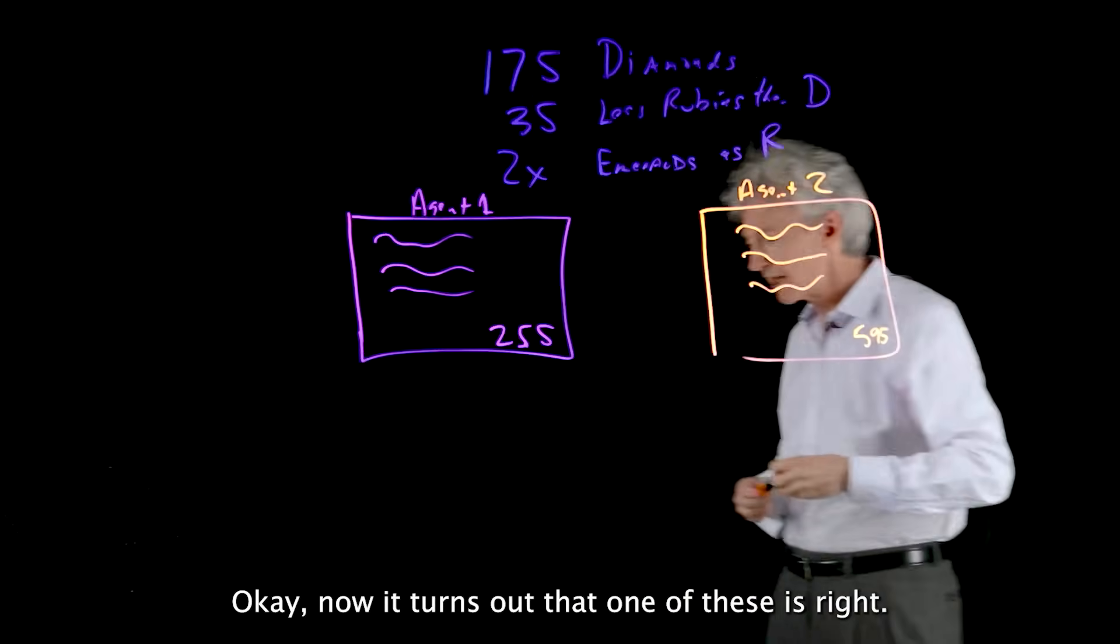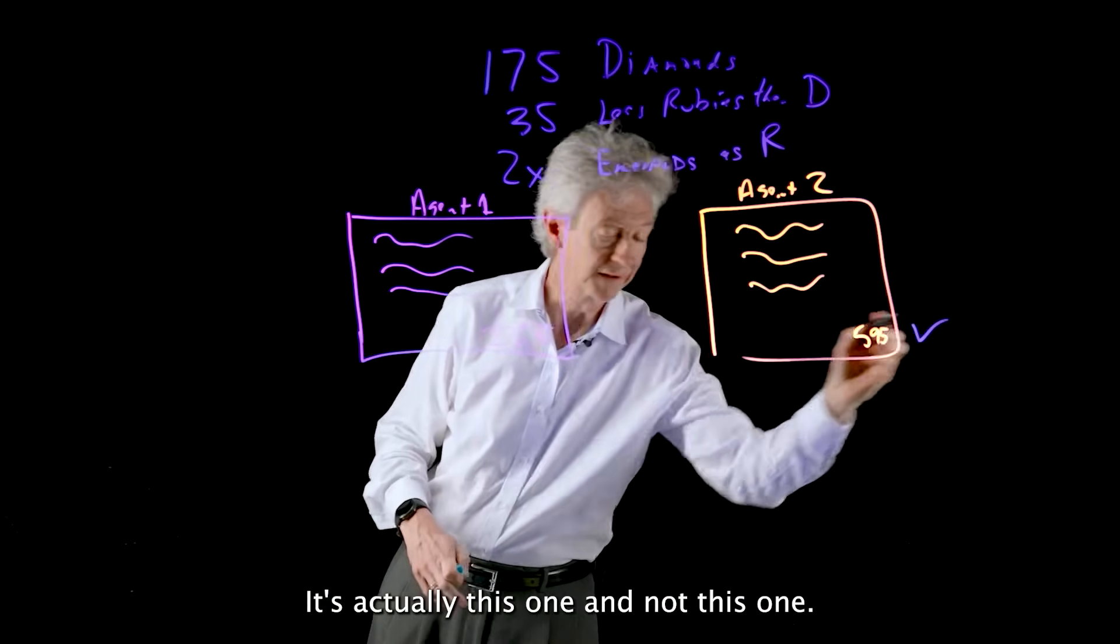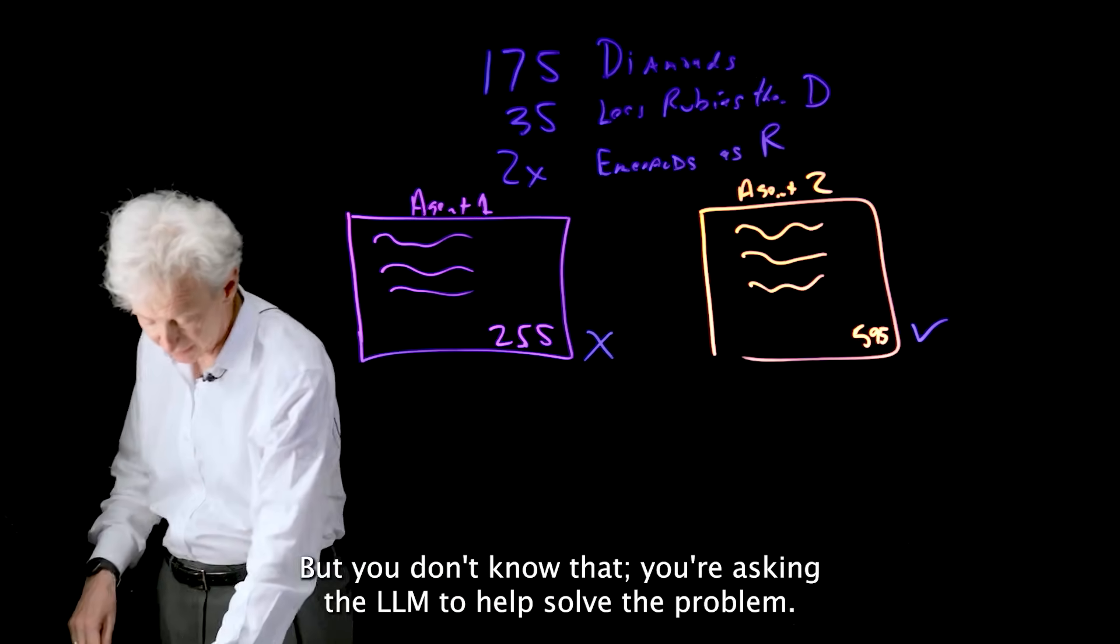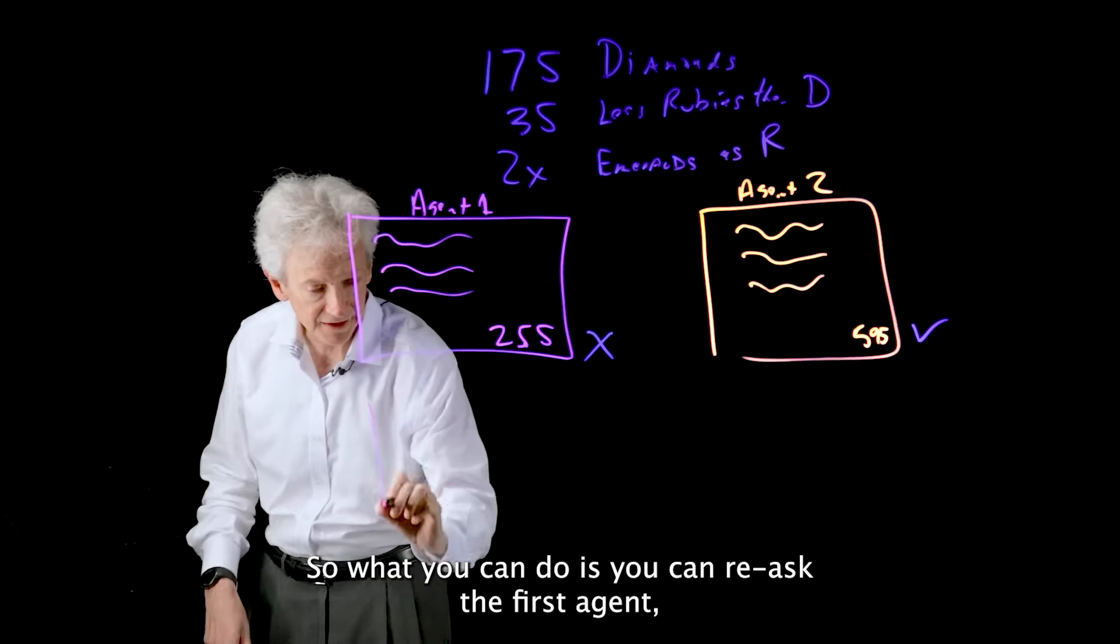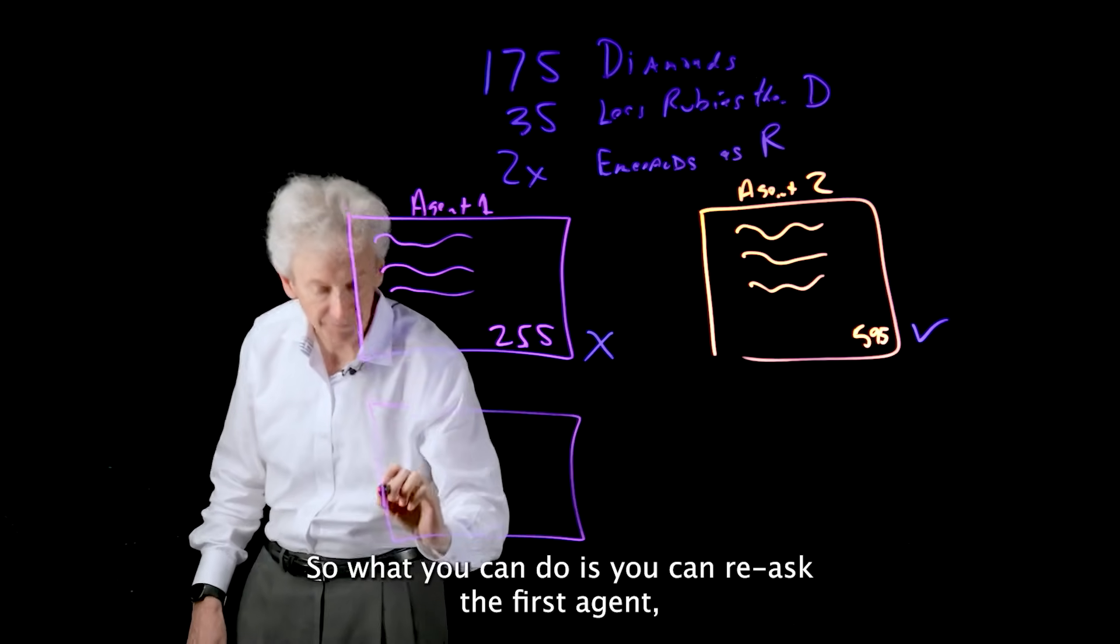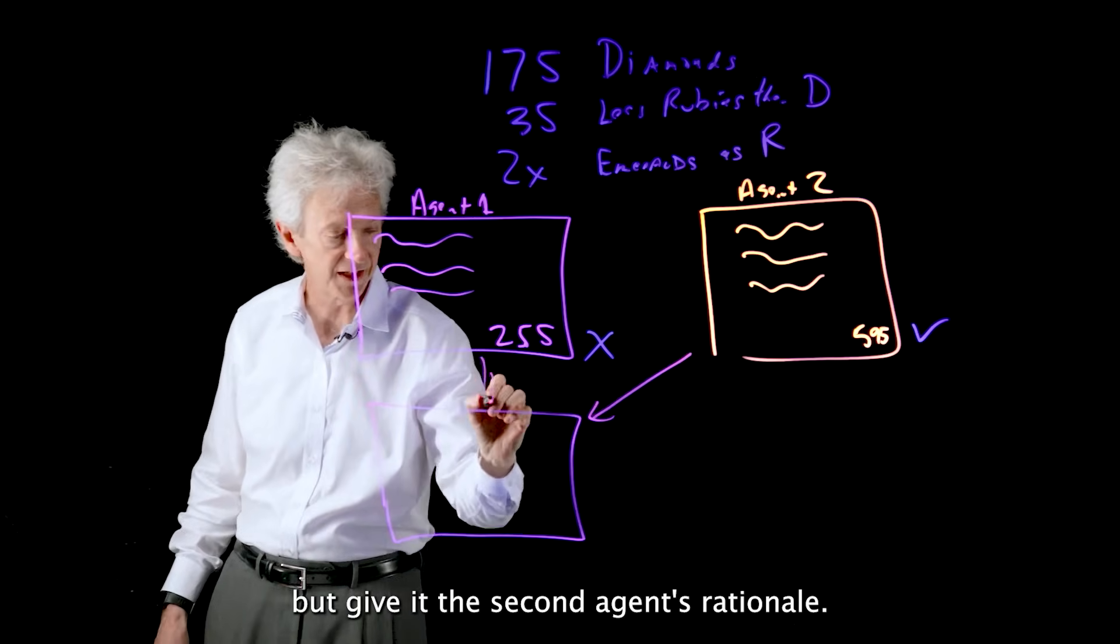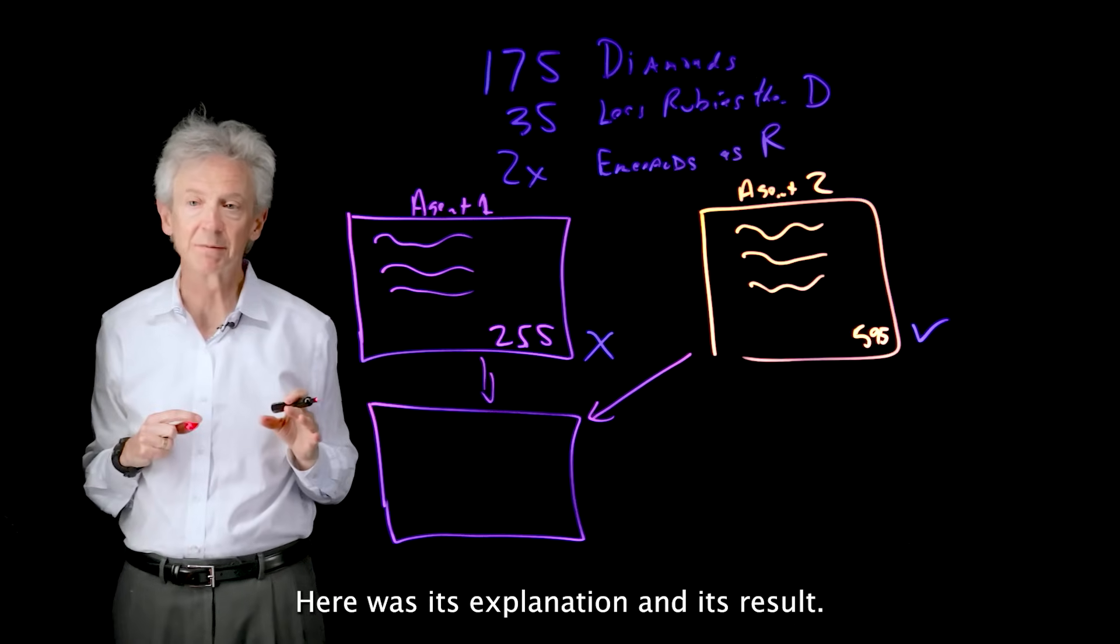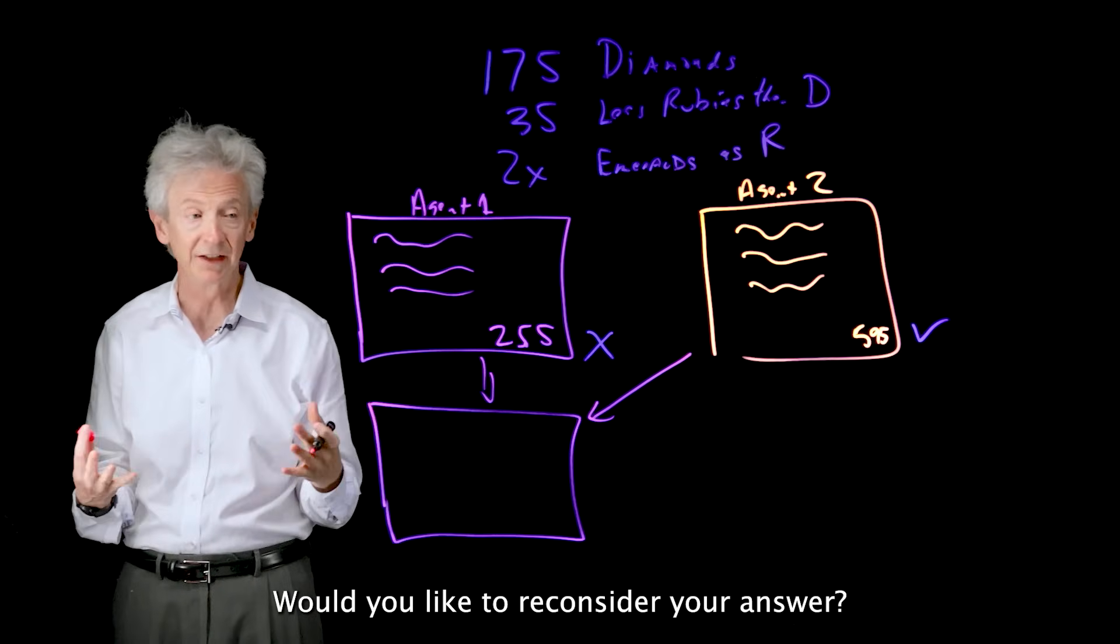Now it turns out that one of these is right. It's actually this one and not this one. But you don't know that. You're asking the LLM to help solve the problem. So what you can do is you can re-ask the first agent, but give it the second agent's rationale. So you can say, I asked another agent the same question. Here was its explanation and its results. Would you like to reconsider your answer?